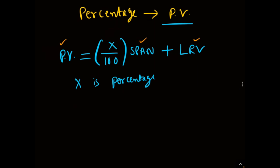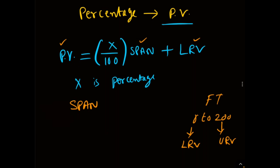Span — what is this span? Every transmitter needs to be configured for a certain range. Say my range is 0 to 200 meters per hour. This 0 we call LRV, lower range value, and this 200 we call URV, upper range value. Span is nothing but URV minus LRV — in this example, 200 minus 0 equals 200. So my span is 200, LRV is 0, and URV is 200.